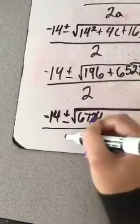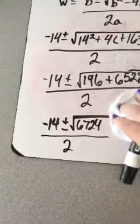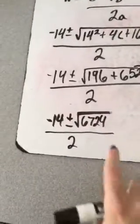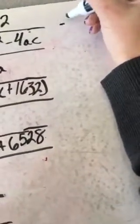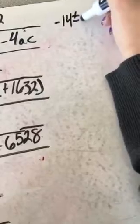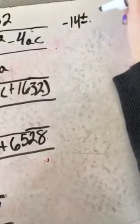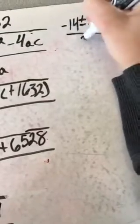Alright, and fortunately this is a perfect square. So I'm gonna move it up here. So it's negative 14 plus or minus the square root of 6724, which is actually 82, divided by 2.